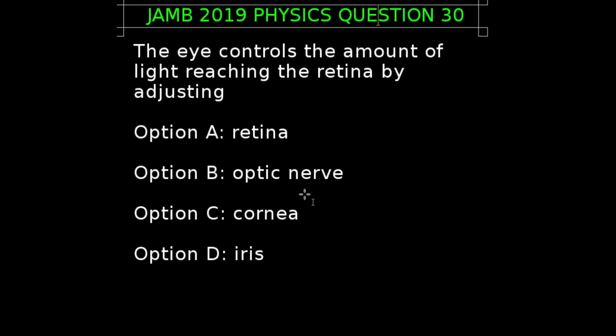Question 30 of the JAMB 2019 physics examination. The eye controls the amount of light reaching the retina by adjusting. In humans and other mammals, the iris is responsible for controlling the amount of light reaching the retina. So the correct answer to this question is option D, which is the iris.